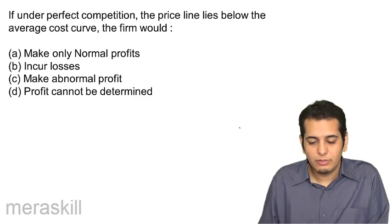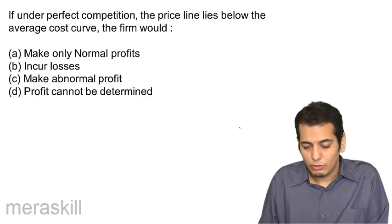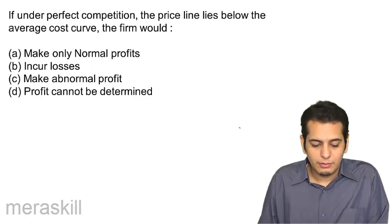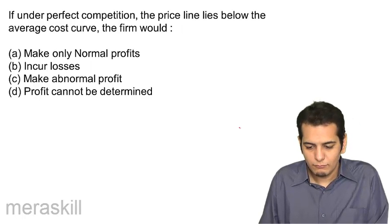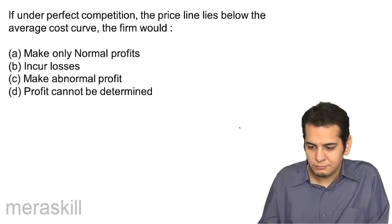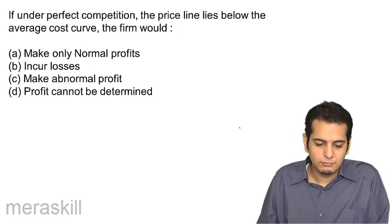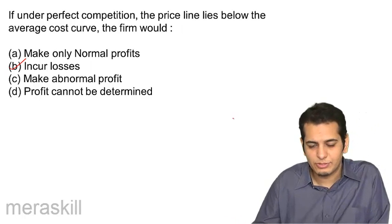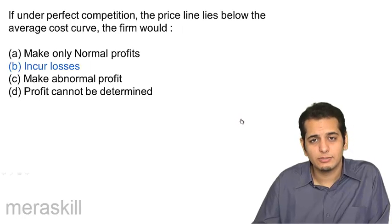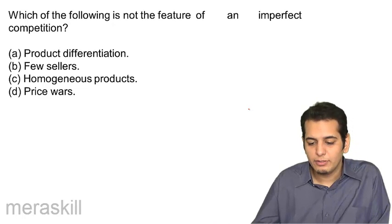If under perfect competition the price line lies below the average cost curve, the firm would: A. make only normal profits, B. incur losses, C. make abnormal profit, D. the profit cannot be determined. The answer is it will incur losses. Let's check. That's the answer.